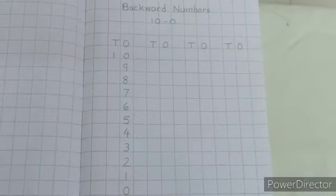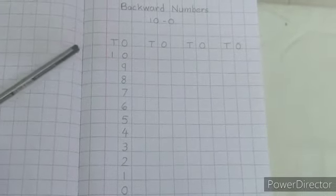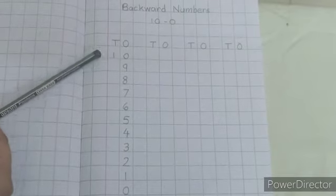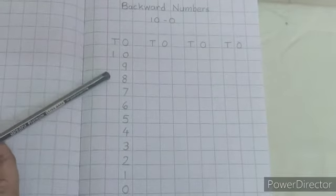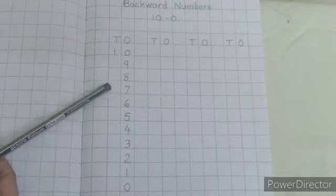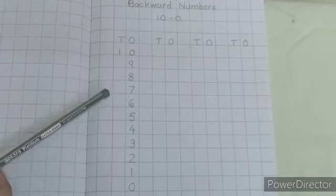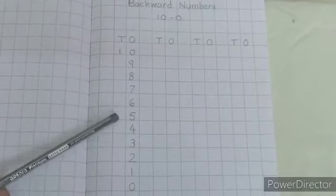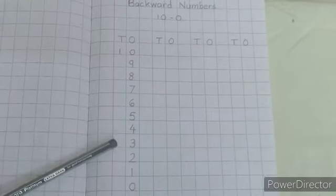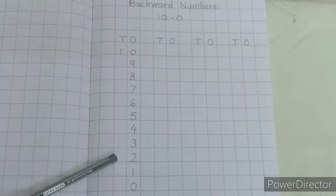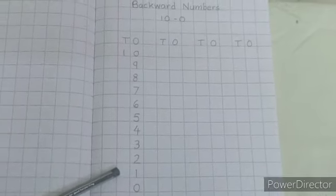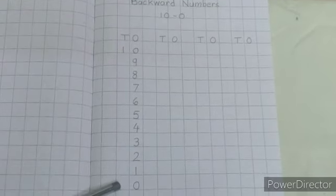Let's count backward numbers from 10 to 0. 10, 9, 8, 7, 6, 5, 4, 3, 2, 1, 0.